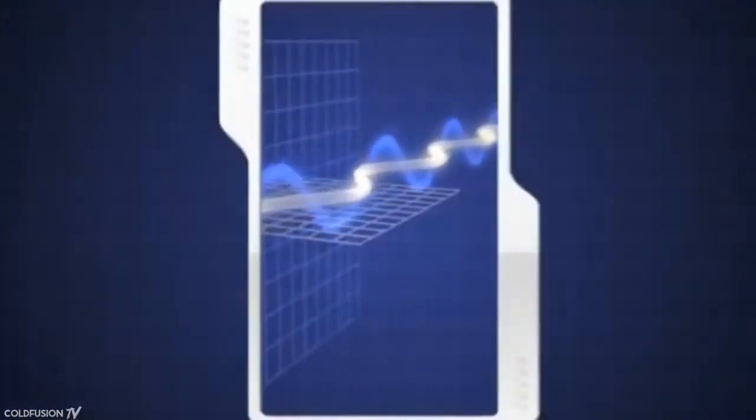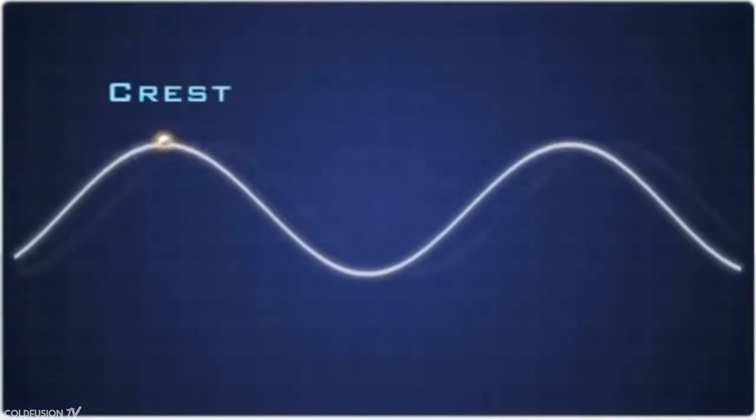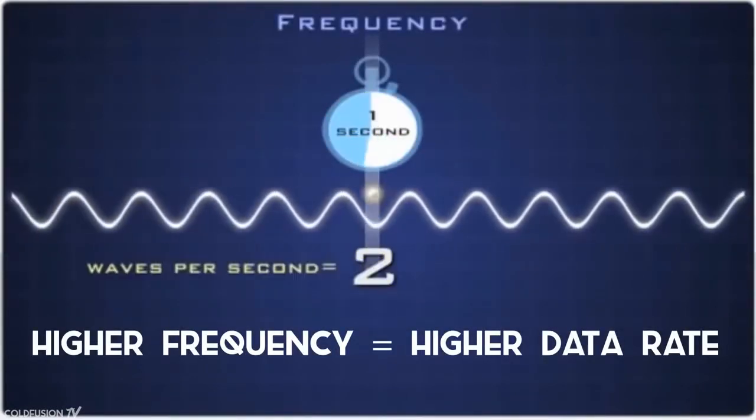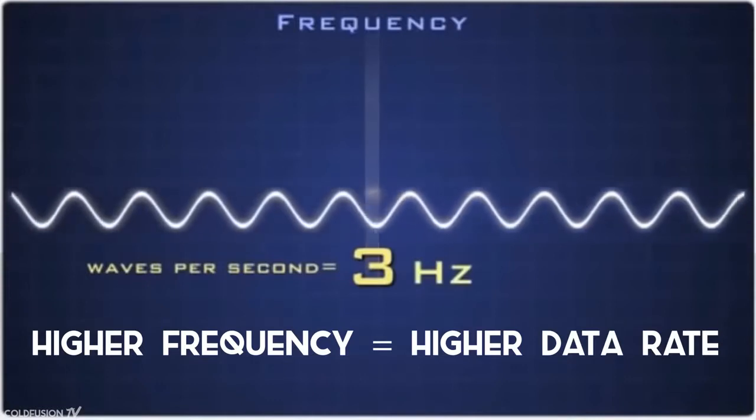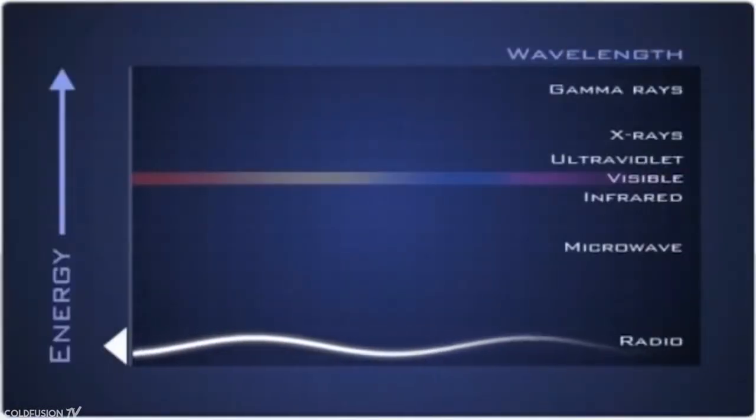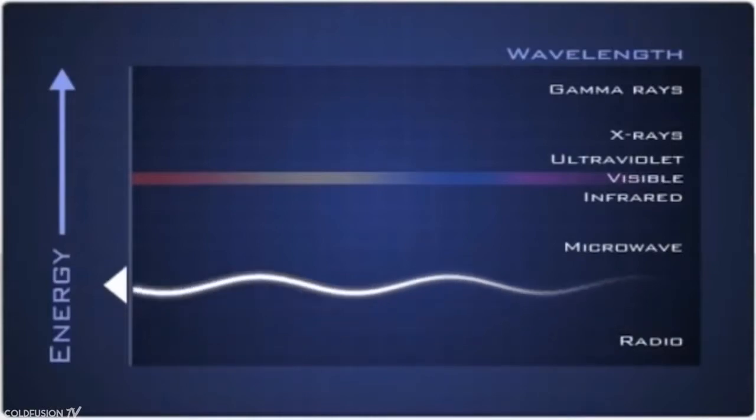Light also has a frequency range 10,000 times greater than radio waves, going up to 790 Terahertz versus a maximum of 300 Gigahertz for radio waves. All this means is that light has the capacity to transmit vastly more pulses of data in much less time than radio waves.